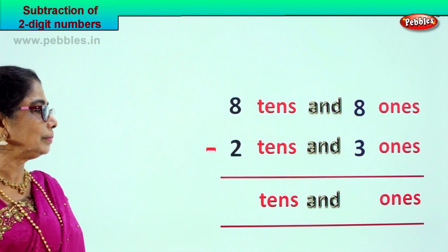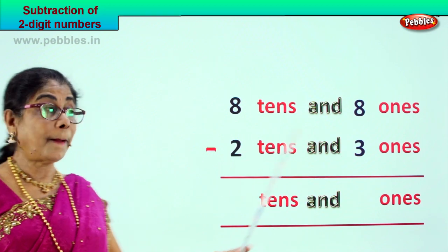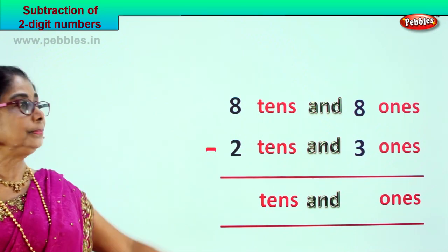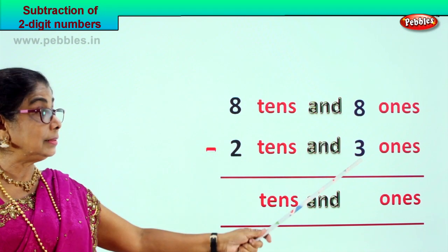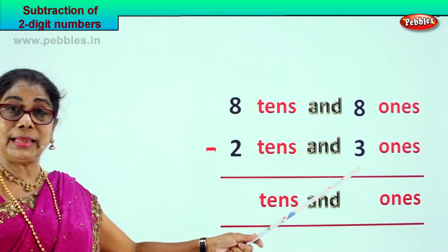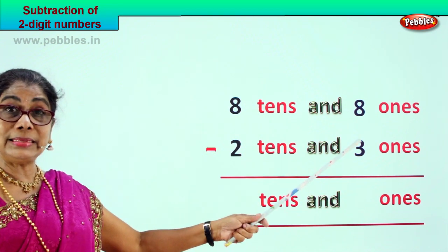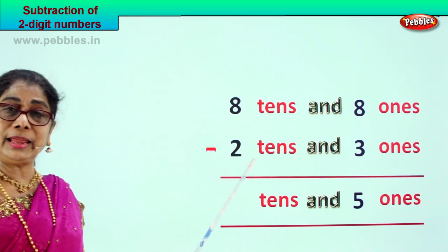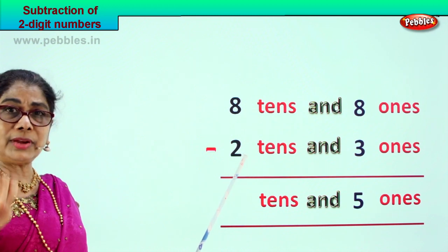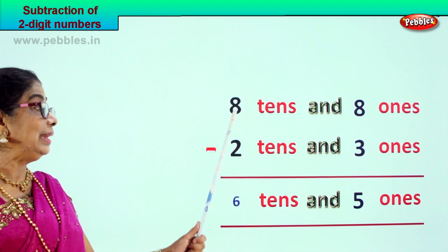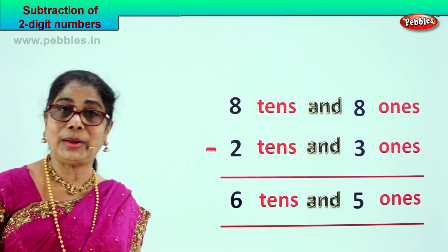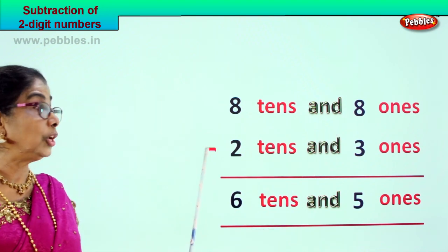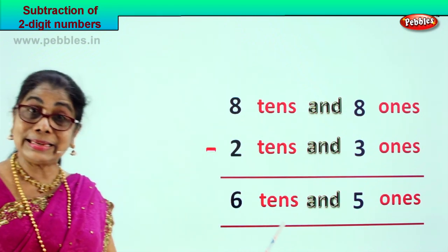Let's go to another sum. 8 tens and 8 ones minus 2 tens and 3 ones. 88 minus 23. Let's find the answer. 8 ones take away 3 — 8 minus 3: 4, 5, 6, 7, 8 — gives you 5. 8 tens minus 2 tens gives you 6 tens. So 88 minus 23 — 8 tens and 8 ones minus 2 tens and 3 ones gives you the answer 6 tens and 5 ones.